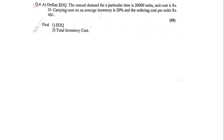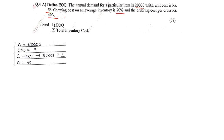The question reads: Define EOQ (you will need to include a theoretical part). The annual demand for a particular item is 20,000 units. The unit cost is rupees 5. The carrying cost on average inventory is 20% and the ordering cost per order is rupees 40. Noting down the data: annual demand = 20,000 units, CPU = 5 rupees, carrying cost = 20% of 5 = 1 rupee, ordering cost = 40 rupees. Now we need to find the EOQ.